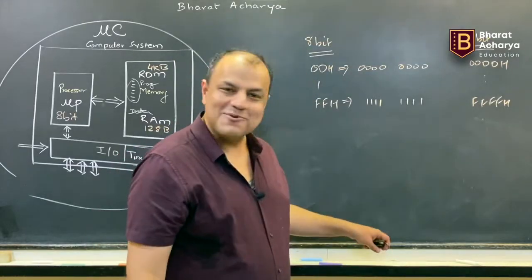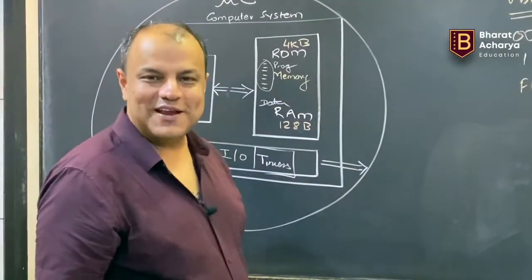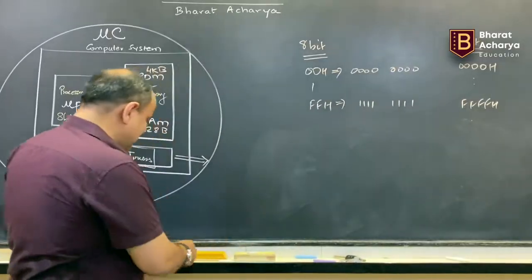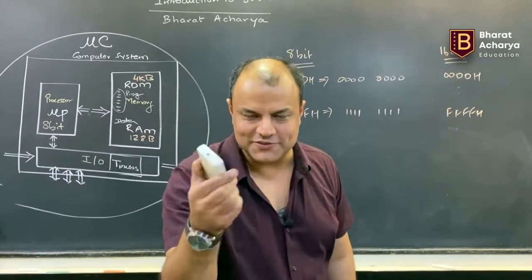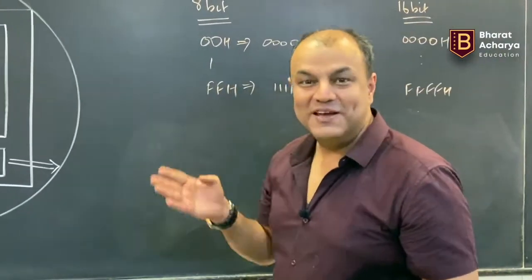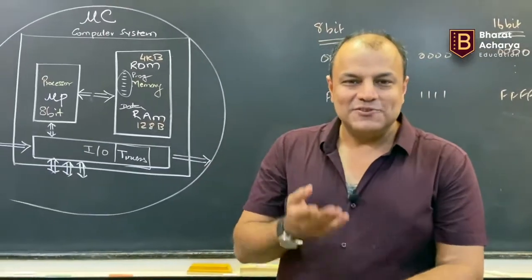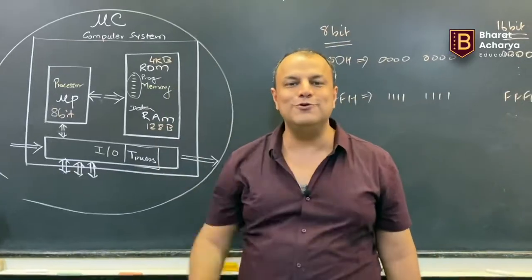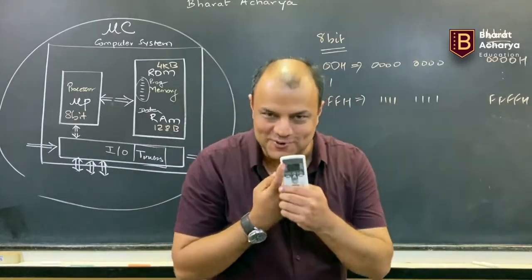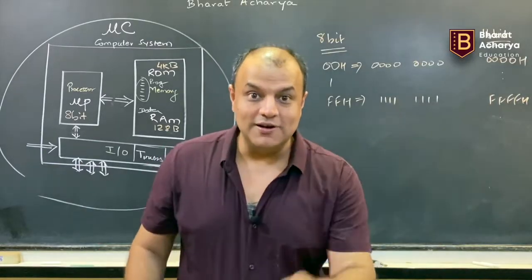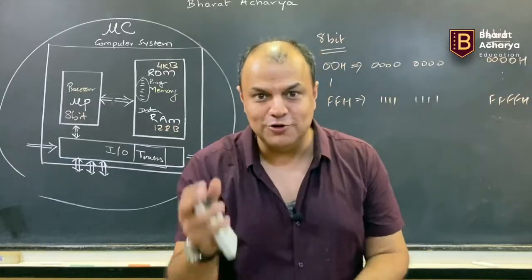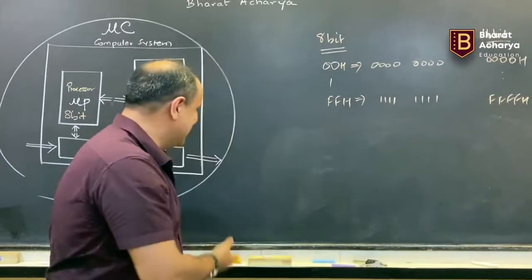RAM is 128 bytes, meaning you can store 128 one-byte numbers. What data do you store for an AC? Temperature is one byte; mode is one byte; fan speed is one byte — three bytes. Timer on-time is two bytes, off-time two bytes — four more bytes. That's seven bytes total. Add another 40 bytes for extra variables — still under 128 bytes. These numbers are far more than sufficient for what the 8051 is used for.